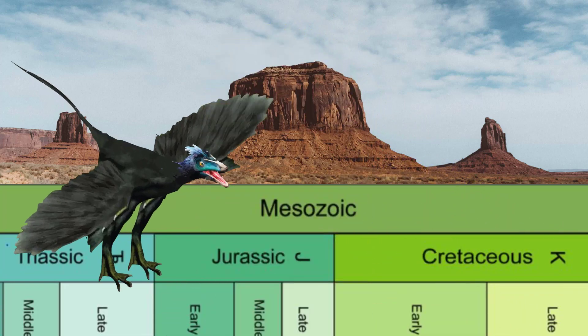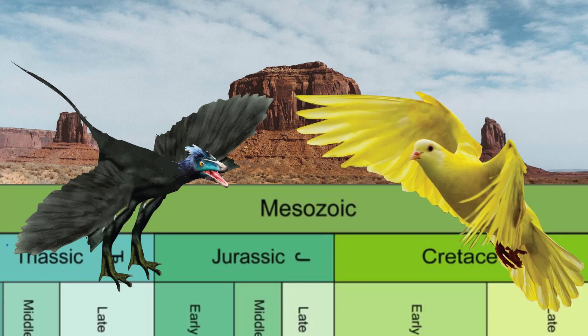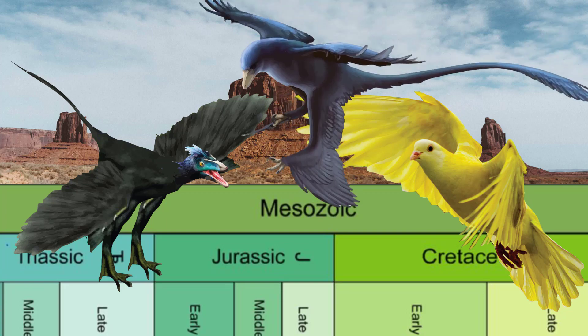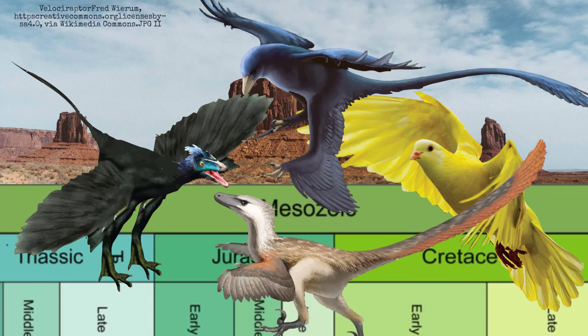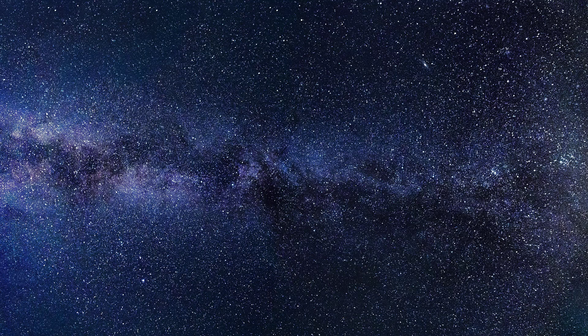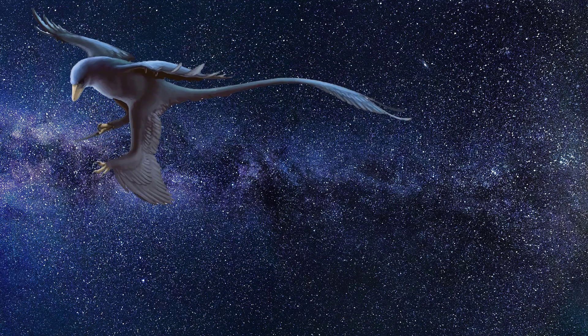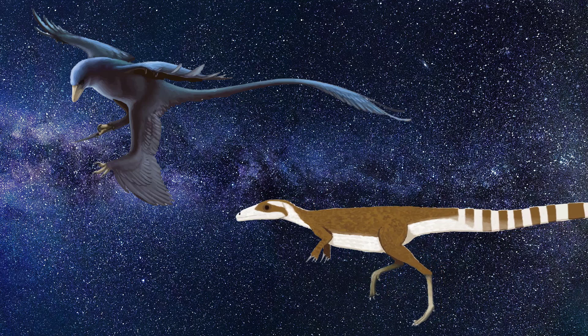Our modern concept of bird, therefore, cannot be read back into the same word used by evolutionary scientists to describe Microraptor and other similar creatures. And finally, as it turns out, Microraptor and many other similar feathered animals have a lot more in common with Sinosauropteryx than they do with modern birds anyway.